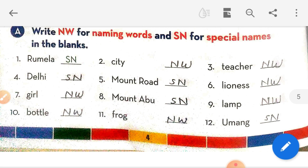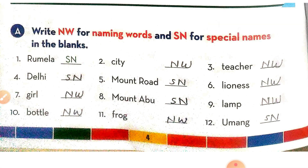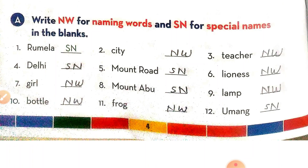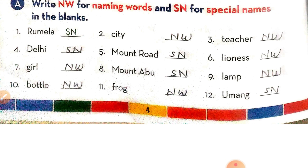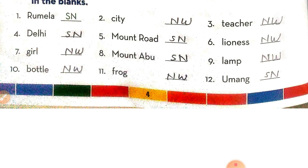'Delhi' — Delhi is a city, the specific name of a city, so it is a special noun. 'Mount Road' is a special noun. 'Lioness' is a naming word. 'Girl' is a naming word. 'Mount Abu' is a special noun. 'Lamp' is a naming word. 'Bottle' is a naming word. 'Frog' is a naming word. 'Umang' is a special noun — Umang is a name of a person, so it is a special noun.